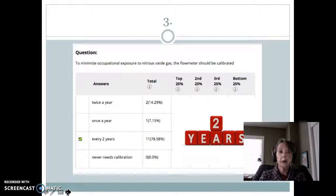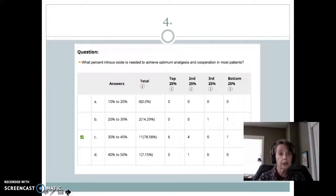To minimize your occupational exposure to nitrous oxide gas, that flow meter should be calibrated every two years. Of course with any dental equipment, we want to follow the manufacturer's instructions. But the flow meter, where the gases are flowing through, should be calibrated every two years.